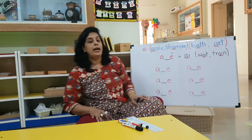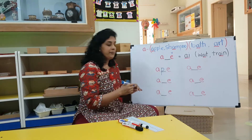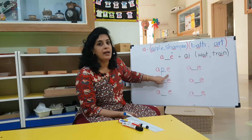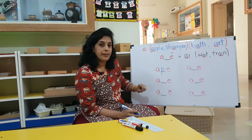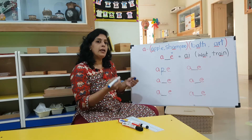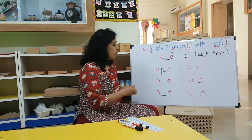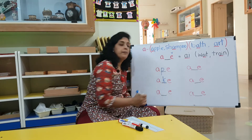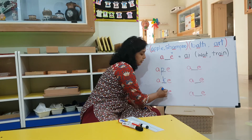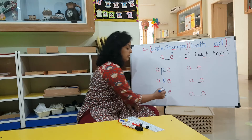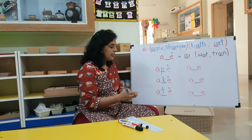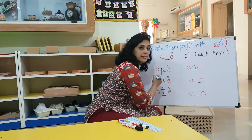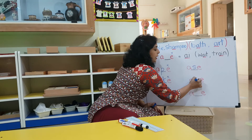For example: 'a-p-e' — the 'e' is silent, so you say 'ape'. You know what an ape is, right? They belong in the monkey family. Now let me try some other combinations: 'a-t-e' — the 'e' is silent — 'ate'. 'a-s-e' — 'ase'. 'a-m-e' — 'ame'. You get it? Whenever you see this pattern, the final 'e' is silent and the 'a' says its name.